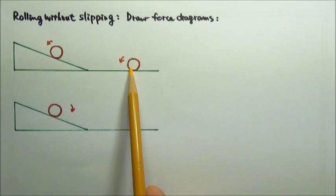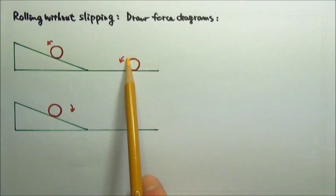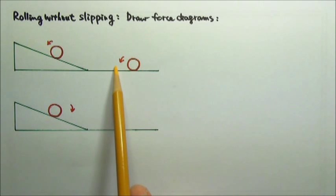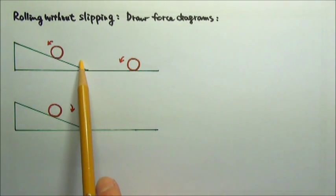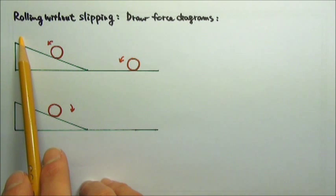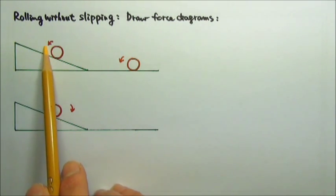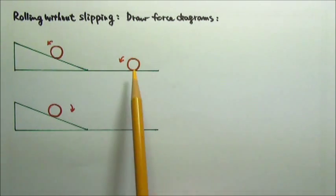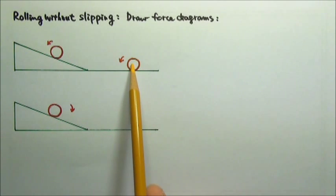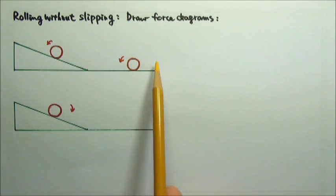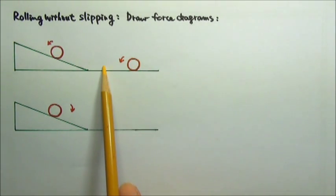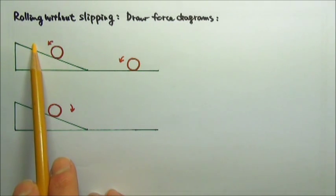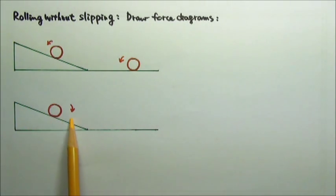A solid uniform sphere rolls without slipping along a horizontal surface. It then rolls without slipping up an incline, goes up to a maximum height, and then rolls without slipping back down. Draw a force diagram for each of these locations: when it's rolling on a horizontal surface, when it's on its way up the incline, and on its way down.